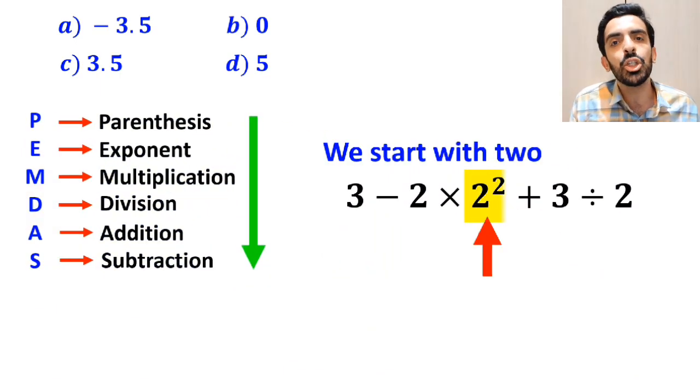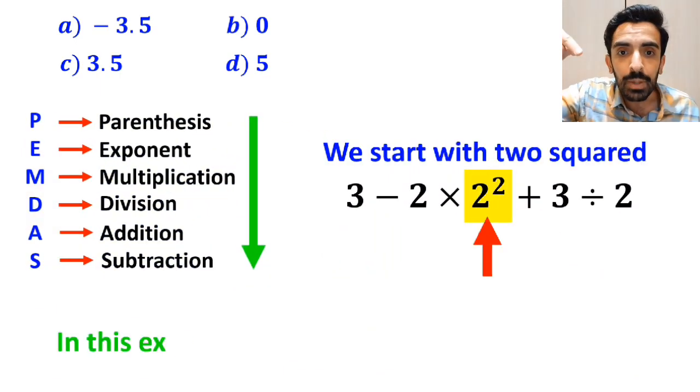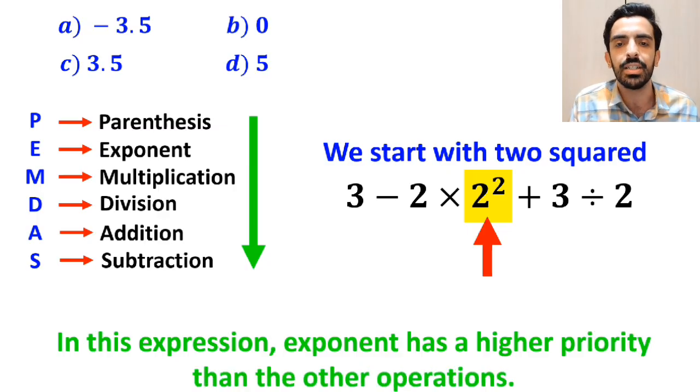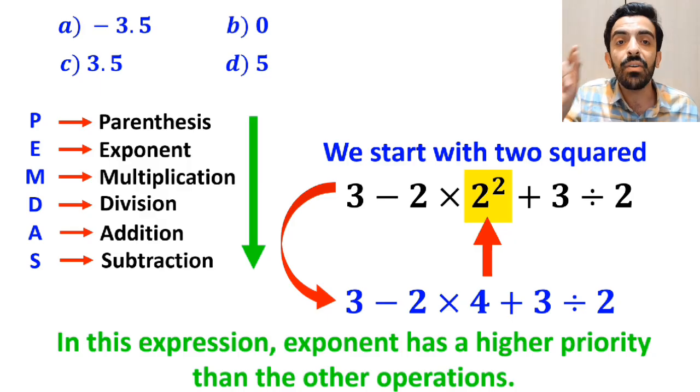Alright, first we start with 2 squared, because in this expression, exponent has a higher priority than the other operations. So, instead of the original expression, we can write 3 minus 2 times 4 plus 3 divided by 2.